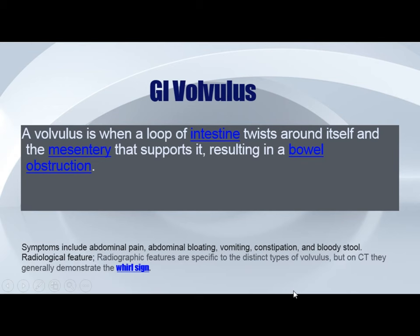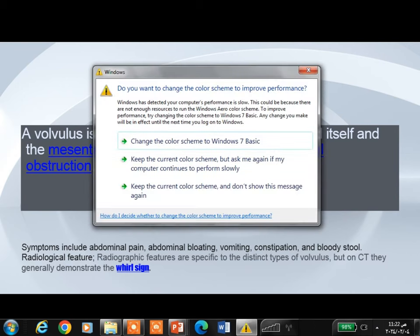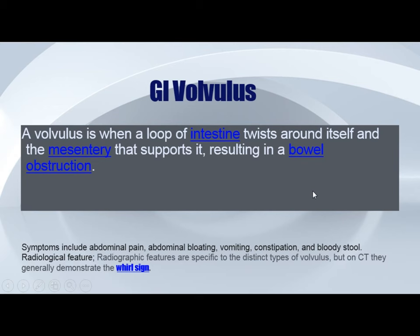What is GI volvulus? Volvulus occurs when a loop of intestine twists around itself and the mesentery that supports it, resulting in bowel obstruction. Symptoms generally for all volvuluses include abdominal pain, as most of them are acute abdomen presenting to emergency. So we have abdominal pain, abdominal bloating, vomiting, constipation, and sometimes bloody stools. You cannot have a volvulus in a place where there is no mesentery — there must be a mesentery to develop volvulus. That is why, generally, we don't have a mesentery for the ascending and descending colon, so volvulus doesn't happen there.